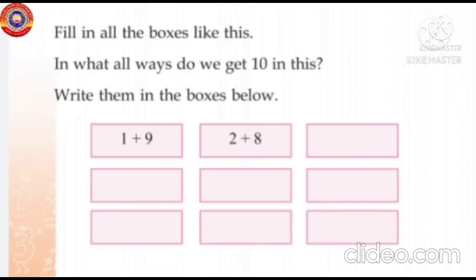Next one. In what ways do we get 10? Write them in the boxes below. Look at the number grid, then write here: 1 plus 9, 2 plus 8, 3 plus 7, 4 plus 6, 5 plus 5, 6 plus 4, 7 plus 3, 8 plus 2, 9 plus 1.